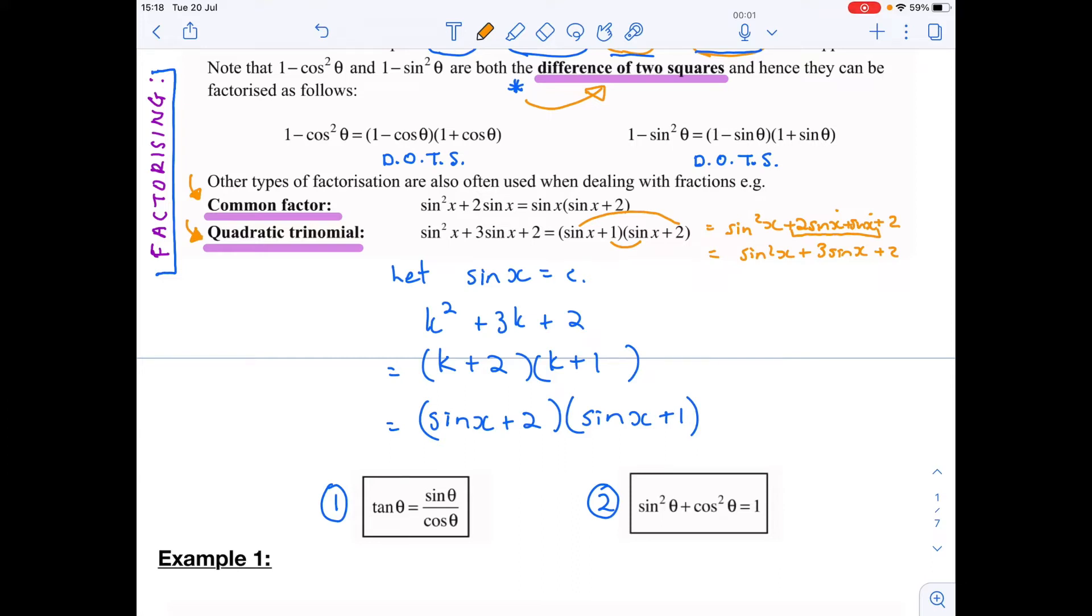If you need to factorize this, we end up with our two brackets looking like that. But some of you like this whole k method, so we're going to use that here. Let sin x equal k. We would end up with a trinomial k squared plus 3k plus 2, which would be easy to factorize: k times k, 2 times 1, and the middle term would be plus 2 plus 1. Then k would be replaced with sin x in both cases. It's to be able to recognize factorizing of a trinomial with trig as well.